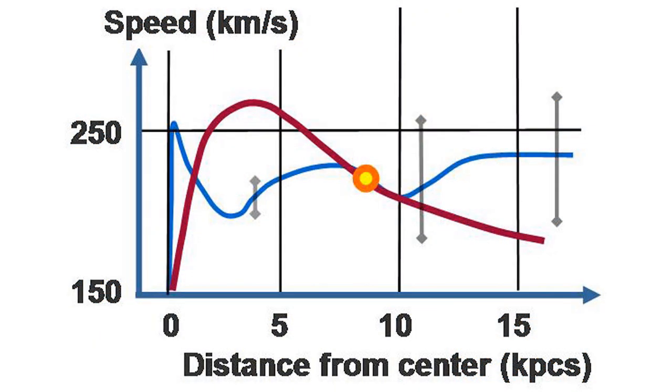One good example of this is the planets moving around the sun. Now, let's check out what observations tell us as regards to the Milky Way. The dark red line is what we expect and the blue line is what's observed. The yellow dot represents our solar system, which moves with a speed of 220 km per second around the galactic center.